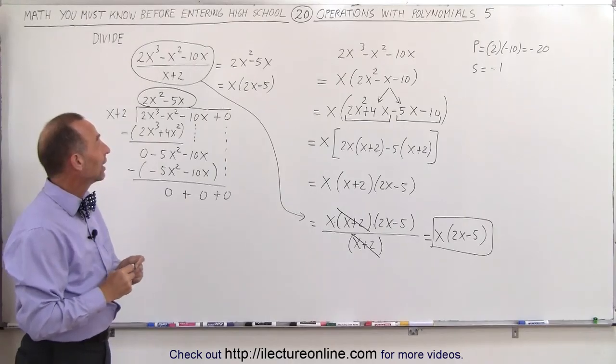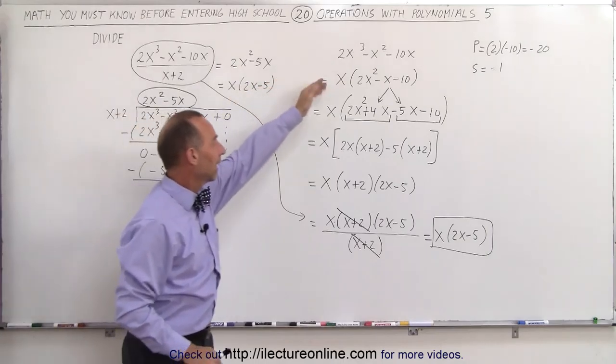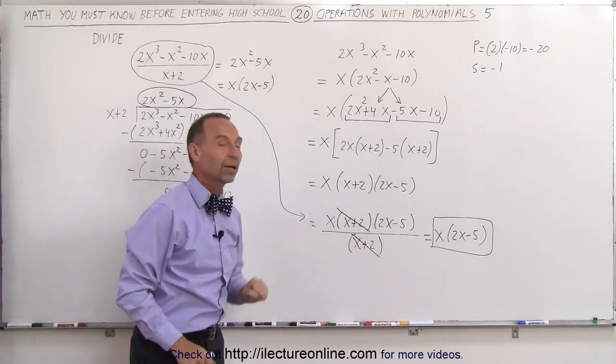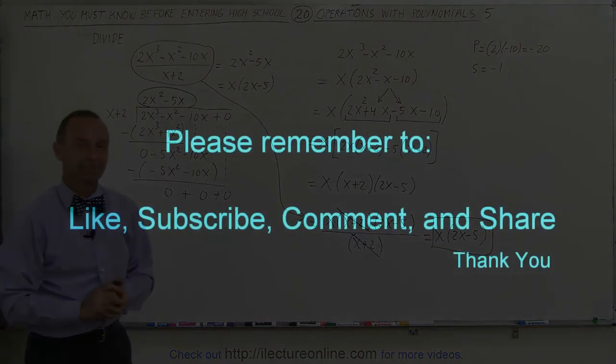So you can see that we can either do this by longhand division, or we can do that by factoring the numerator, and then dividing the denominator into the numerator like this. And that's how that's done. Thank you.